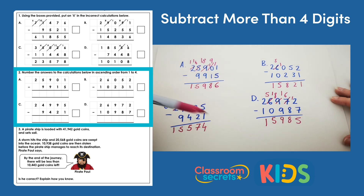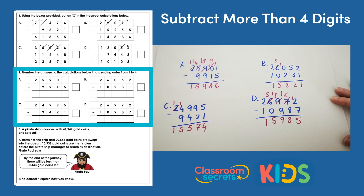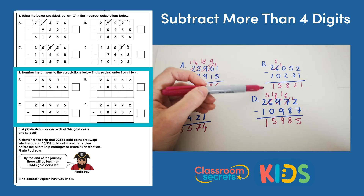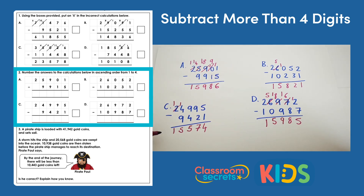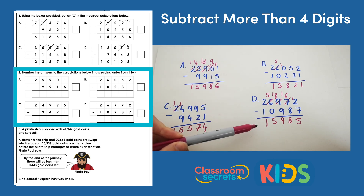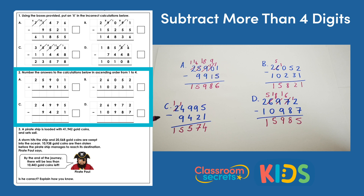So if we look at all of our answers — they're all in the 15,000s: a we've got 15,986; b we've got 15,821; c is 15,574; and d is 15,985. Now we need to compare all of these answers. We put 1 next to the smallest and work up to the largest, which will then be a 4.